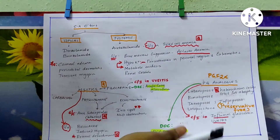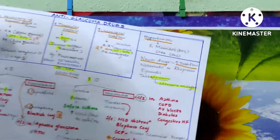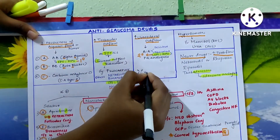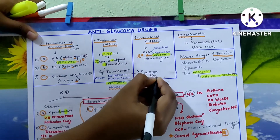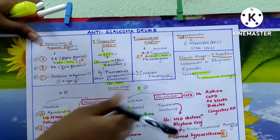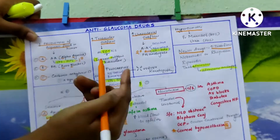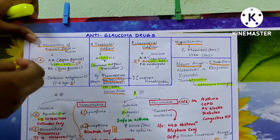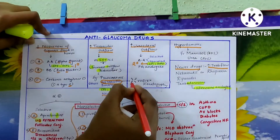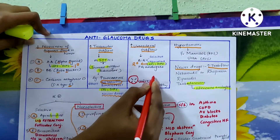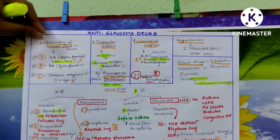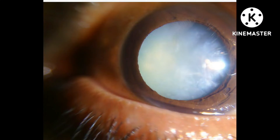One missed point about natarsidyl: its major side effect is vortex keratopathy — this is also an important exam question. So remember: vortex keratopathy is caused by natarsidyl.